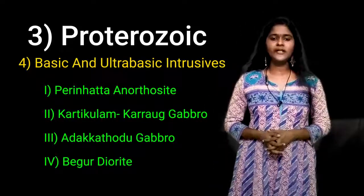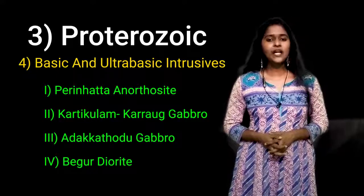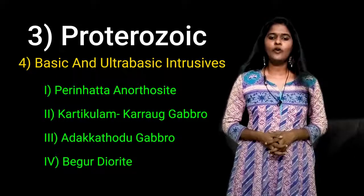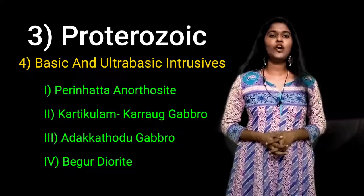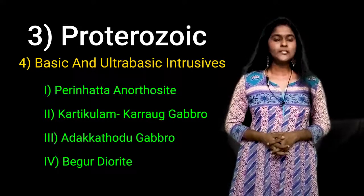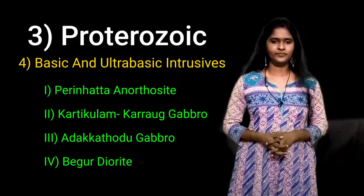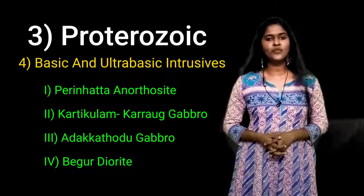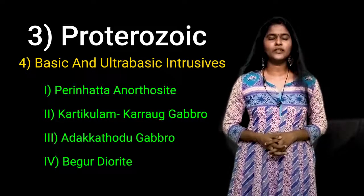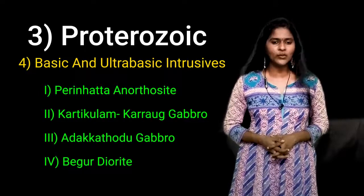The first category in the basic and ultrabasic intrusives is the Peringala Anorthosite. It is an elliptical body of anorthosite spread over an area of more than 50 square kilometers and it is reported from Peringala of Kannur district.